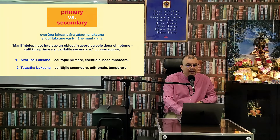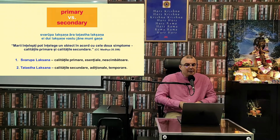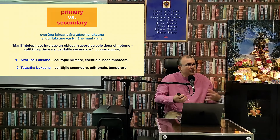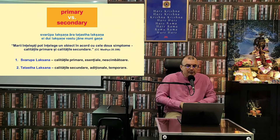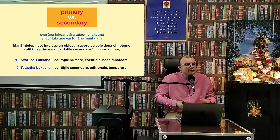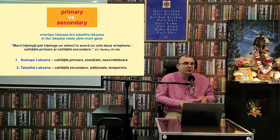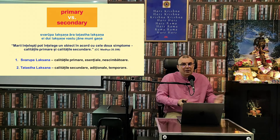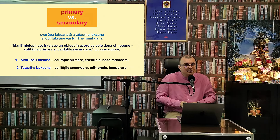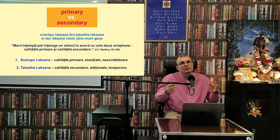Un alt exemplu: calitățile primare ale unui copac — Svarupa Lakshana — sunt tulpina, crengile, frunzișul. Fructele copacului sunt deja Tatasta Lakshana, calități adiționale. Cum ar fi că un copac poate să fie mai mic, uscat, sau imens de mare.